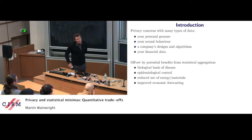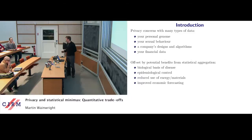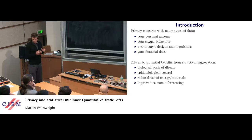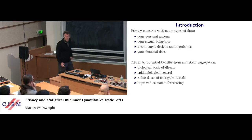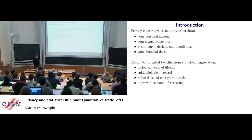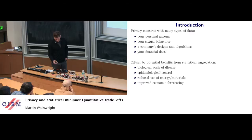To do that, the first thing you have to do is introduce some way of modeling what it means for data to be private. This is a very big area — there are lots of ways of formalizing privacy. Many of them are cryptographic in nature and give very strong guarantees. We're not going to talk about the cryptographic approach. We're going to talk about an approach that has come out of computer science, initially developed by people with training in cryptography.